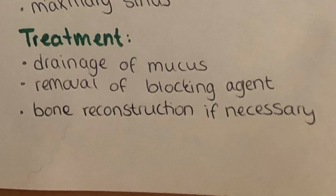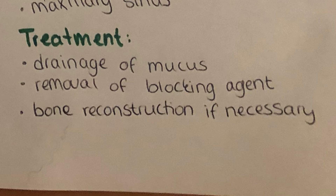Treatment is primarily drainage of the mucus, which can sometimes be easier said than done. Surgery may be required where a small part of the bone is removed or an artificial exit for the mucus is created if the blockage of the ostium is too difficult to remove. It may also be possible to remove the blocking agent directly to free the drainage. Bone reconstruction might be necessary, as the pooling of mucus can thin the bone and lead to permanent destruction of the normal bone structure.